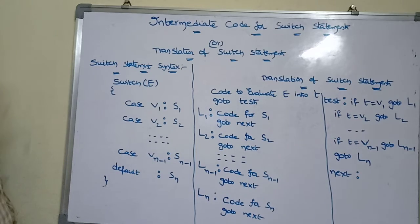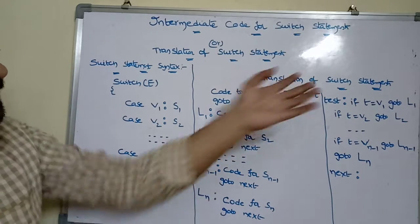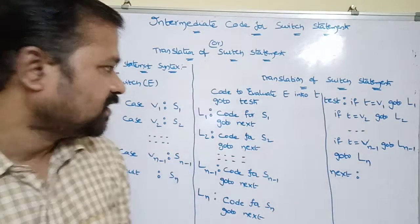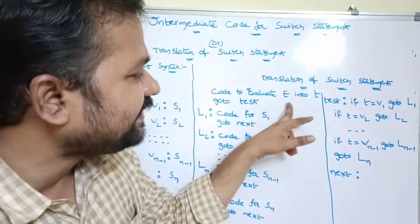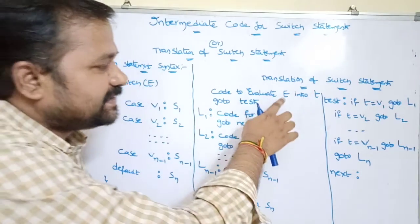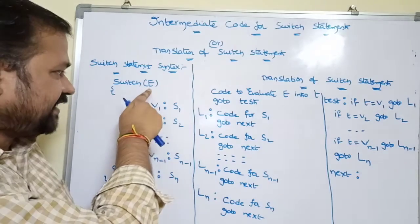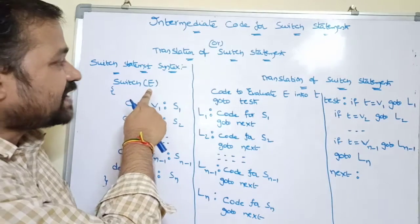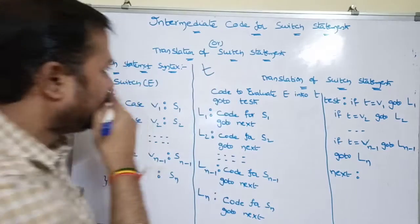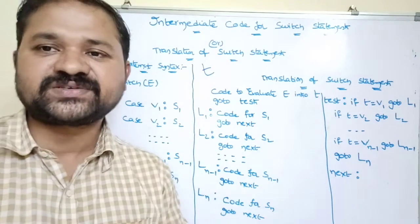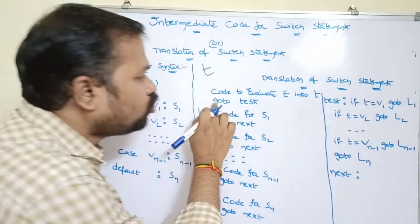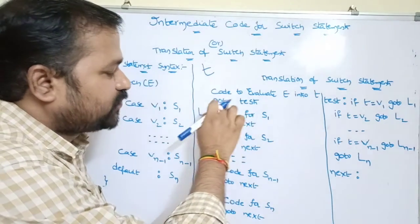Now let's see the translation of switch statements. The first step is code to evaluate 'e' into 't'. The expression is evaluated and the result is stored in a variable called t. Next, 'goto test' — when this is executed, control goes to the label 'test'.